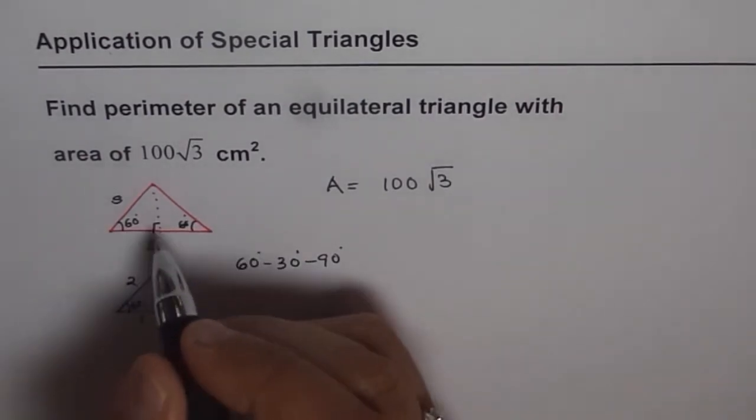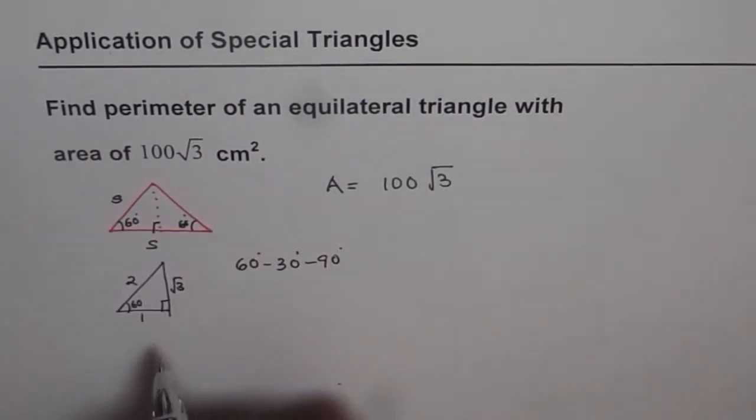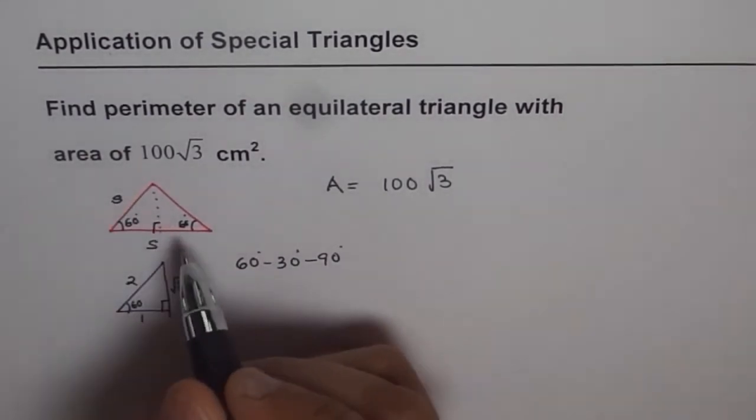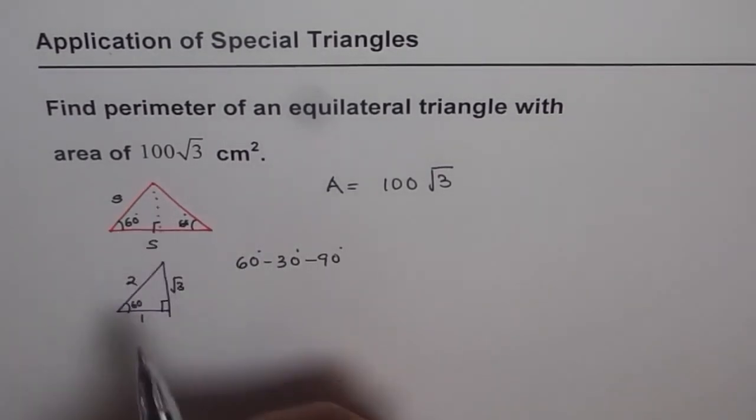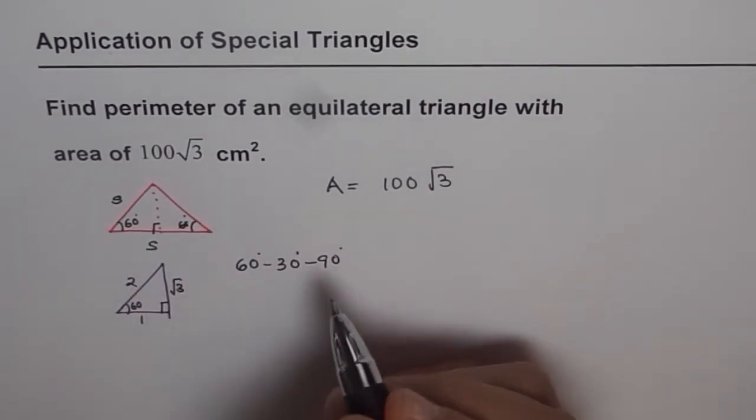So height should be equal to, if you see this ratio, if the side is s, then height will be (√3/2)s. So in an equilateral triangle, we have height equals to (√3/2)s.